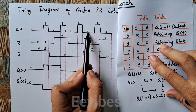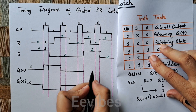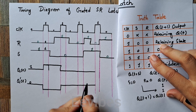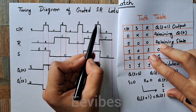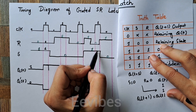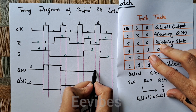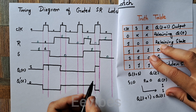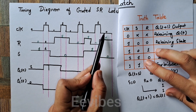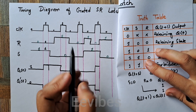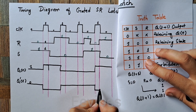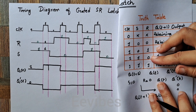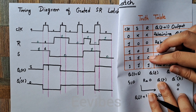When the clock is zero, no changes from the input are introduced. When the clock is one again, R=0 and S=1, so Q(t) switches to one — the output is set — while Q-complement becomes zero. When the clock switches back to zero, you don't care about the input and it remains in the retaining state. In this way you can draw the output waveform for the gated SR latch. Thank you for watching.